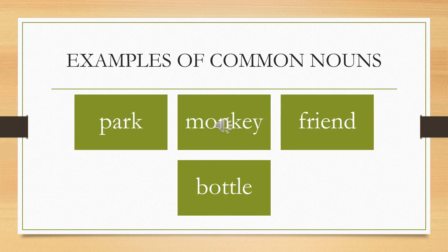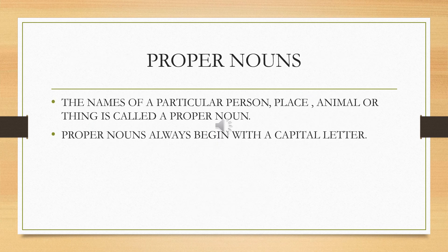Let us see some examples of common nouns. Words like park, monkey, friend, bottle — all of them come under common nouns. We will now talk about proper nouns.